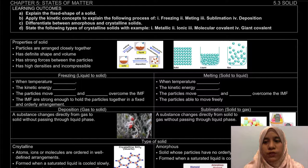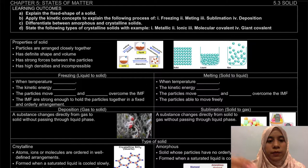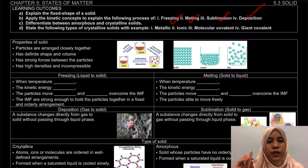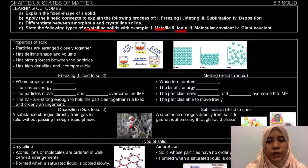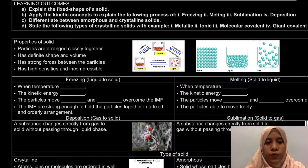Assalamualaikum and hello everyone. Welcome to a new video of chapter 5, which is 5.3 solid. In this video, we're going to explain the fixed shape of a solid, apply the kinetic concept to explain freezing, melting, sublimation and deposition, and state the types of crystalline solid with examples of metal, ionic, molecular covalent and giant covalent.